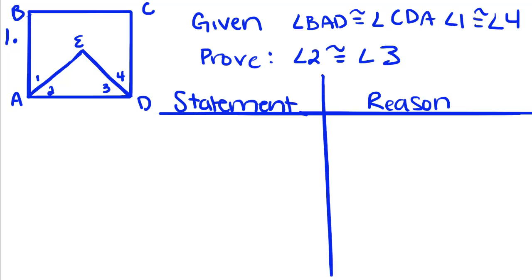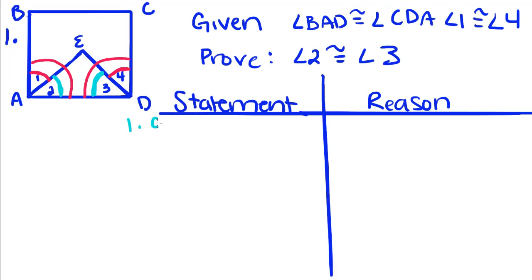We're given that angle BAD is congruent to angle CDA — BAD is this big angle here, and CDA is this big angle here. And angle 1 is congruent to angle 4. They want us to prove that this angle is congruent to this angle. So first, we're going to rewrite our given: angle BAD congruent to angle CDA, angle 1 congruent to angle 4. And that's our given.